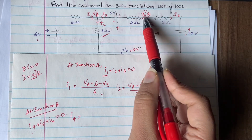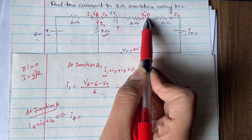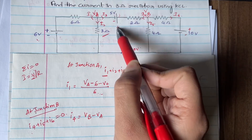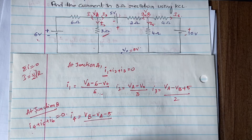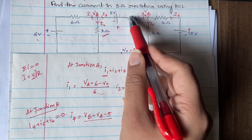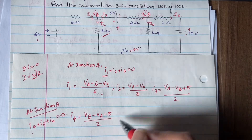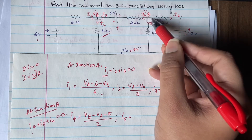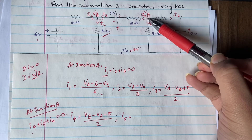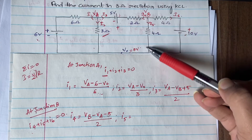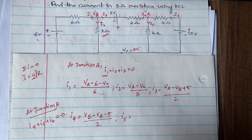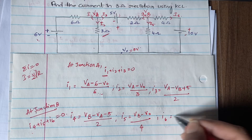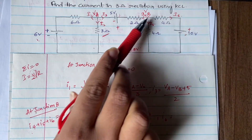For i4: it flows from V_b to Vₐ, so V_b is at higher potential — V_b is positive. The 5V source here has current going from positive to negative, so it gets a minus 5 sign. Resistance is 2 ohms. So i4 = (V_b − Vₐ − 5) / 2. For i5: it flows from V_b to V₀, so i5 = (V_b − V₀) / 4.